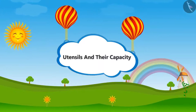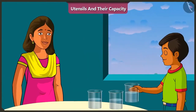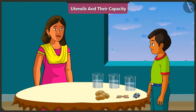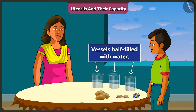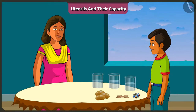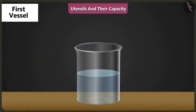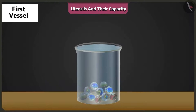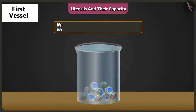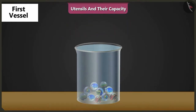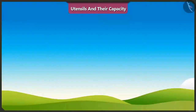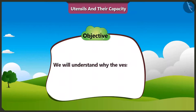Utensils and their capacity. Mishtu, what are you doing with water? All these vessels are half full. I am trying to fill them completely without adding more water. And how? See, as soon as I dropped 10 marbles in a vessel half full with water, the vessel got completely filled with water. Mishtu, why did the water raise as soon as we dropped the marbles in the vessel? That's what I cannot understand. Come on, I will explain. Today, we will understand how water level rises in a vessel when we drop objects in it.